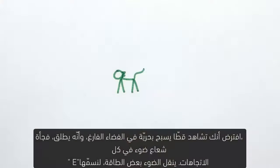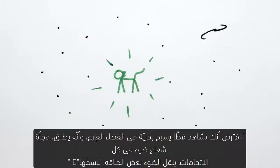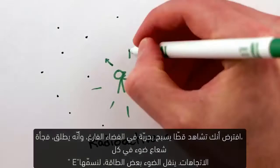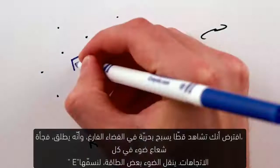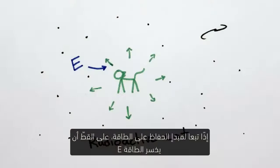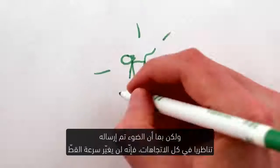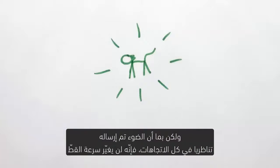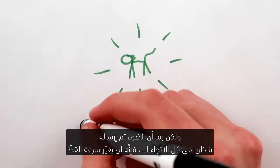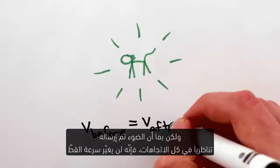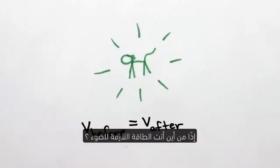Suppose you're watching a cat float freely in empty space, when suddenly it emits a flash of light in all directions. The light carries away some energy, we'll call it E, so by conservation of energy, the cat must have lost energy E. But since the light was emitted symmetrically in all directions, it won't have changed the cat's velocity. So where did the energy for the light come from?